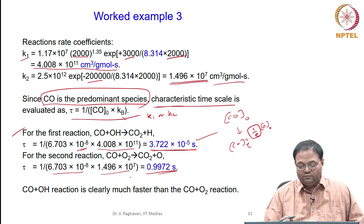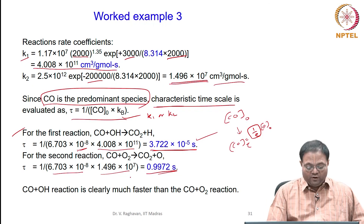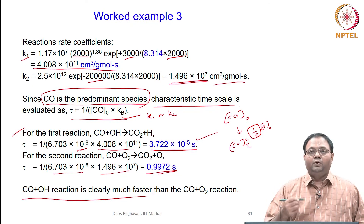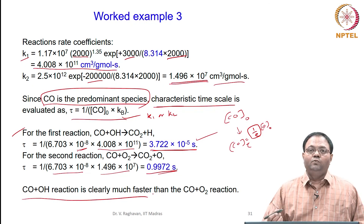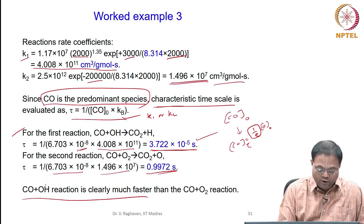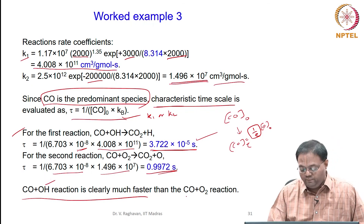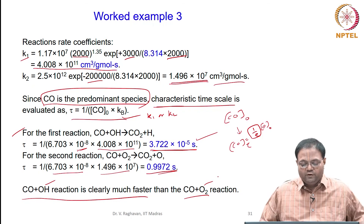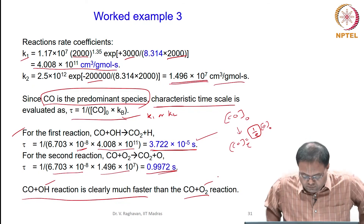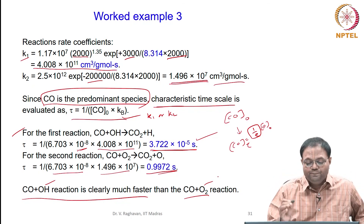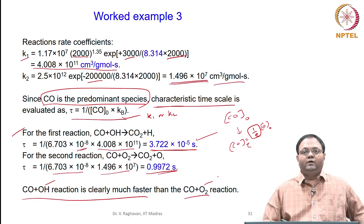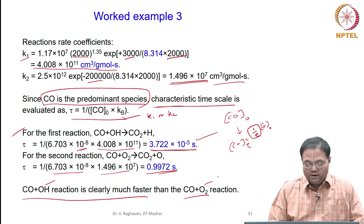The consumption of CO by OH is much faster than the consumption of CO by O₂. This is a very important conclusion. This finishes the worked examples involving chemical kinetics.